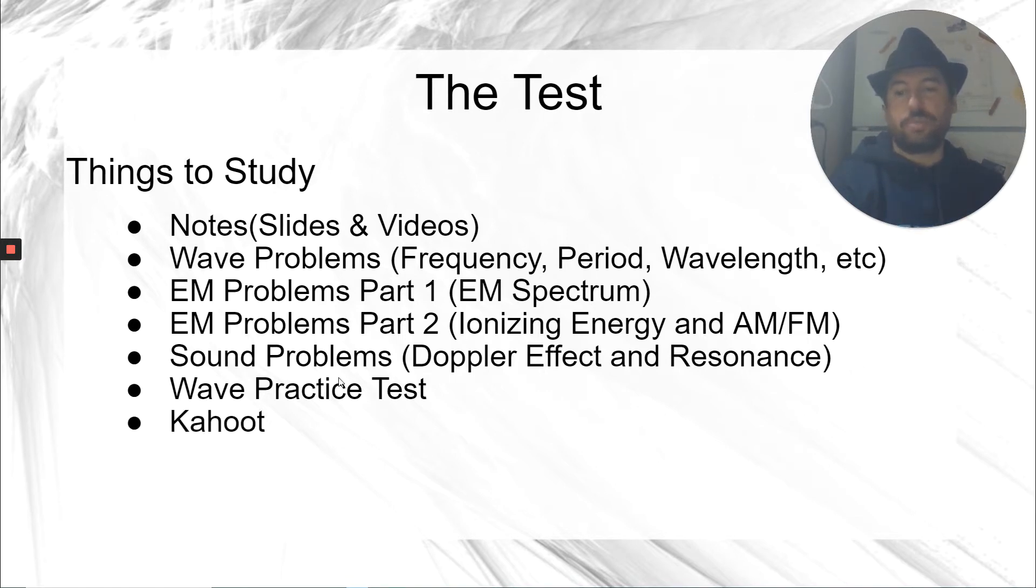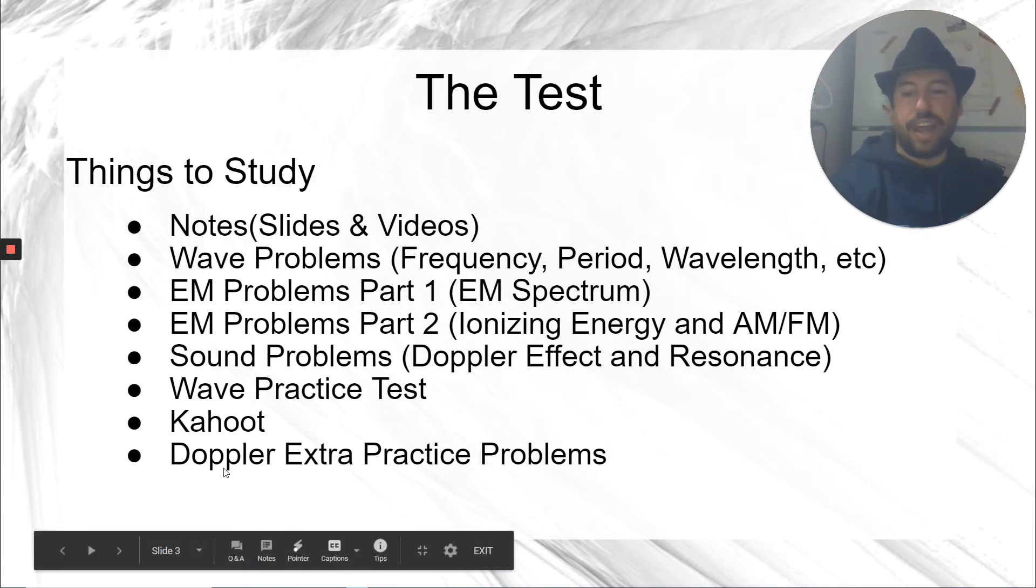There is a Kahoot. The Kahoot is concepts only, and there's a bunch of questions. You can quiz yourself, take it multiple times. And for honors, there are some extra practice problems for the Doppler effect calculations. It is a quiz. You can take it as many times as you want. Every time you retake it, it's going to give you different questions. So take it six, seven, eight times if you want. It's going to give you different questions on the Doppler effect. The questions are going to be worded exactly the same. It's just the numbers are going to be different every time you take the quiz. I would still probably start with the practice test before I go to the Doppler effect extra practice problems.